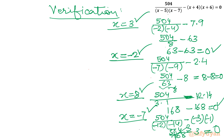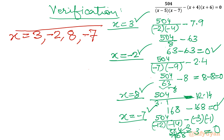So our final verified solution set is: x = 3, x = −2, x = 8, and x = −7. I hope you liked this video. Do not forget to like, share, and subscribe. Bye bye till the next video. Please take care of yourself.